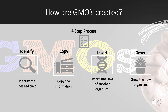Step two is copy. After scientists find the gene trait they want to use, they copy that gene. For example, if they were looking for a gene that would provide pest resistance, they would use a gene from a plant that already has it and copy that gene.